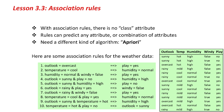If the outlook is sunny and play is no, then humidity is high. We don't have to predict play, or indeed any particular attribute. Looking at rule number 4 — outlook is sunny and play is no — the first two instances satisfy that rule, and there are no others. It's 100% correct, but it only covers two instances.